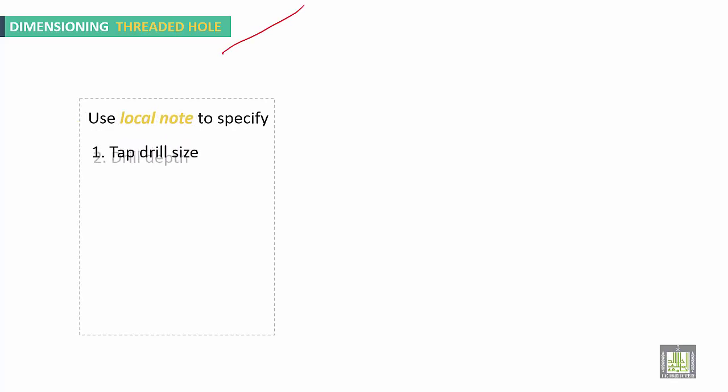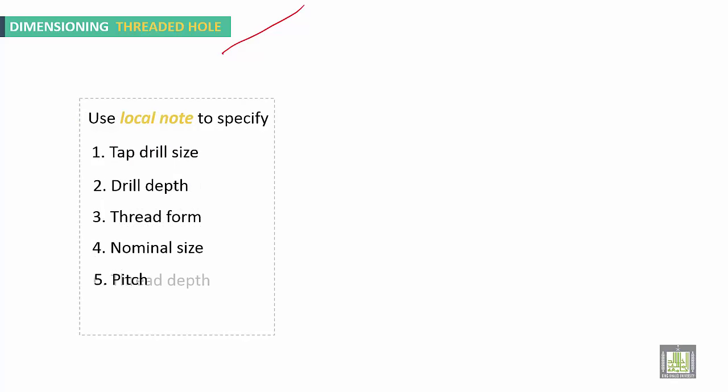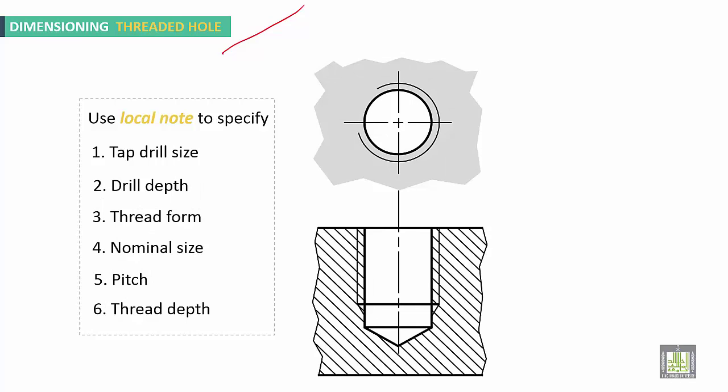For dimensioning a threaded hole, use a local note to specify the tap drill size, drill depth, thread form, nominal size, pitch, and thread depth. For example: 8.5 drill (tap drill size), 20 millimeters deep, M10 as the nominal size, and 15 mm as the thread depth.